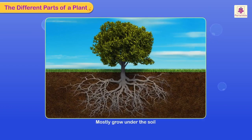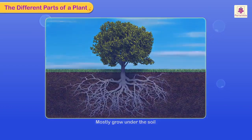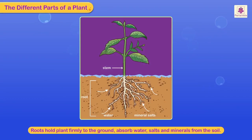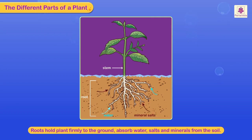The different parts of a plant. Roots of a plant mostly grow under the soil. The roots hold the plant firmly to the ground, absorb water, salts, minerals, and other nutrients from the soil, and transport these up to the stem of the plant.